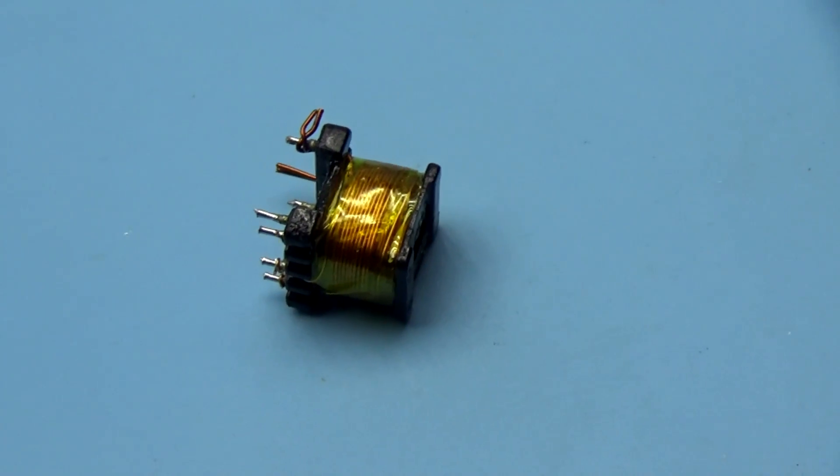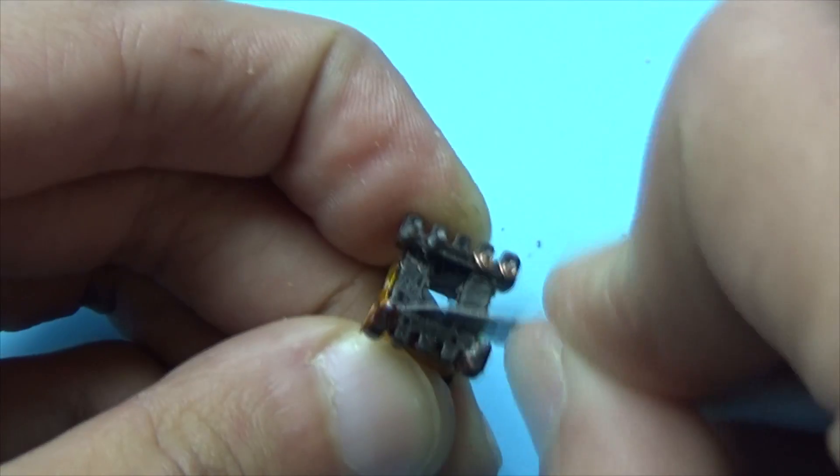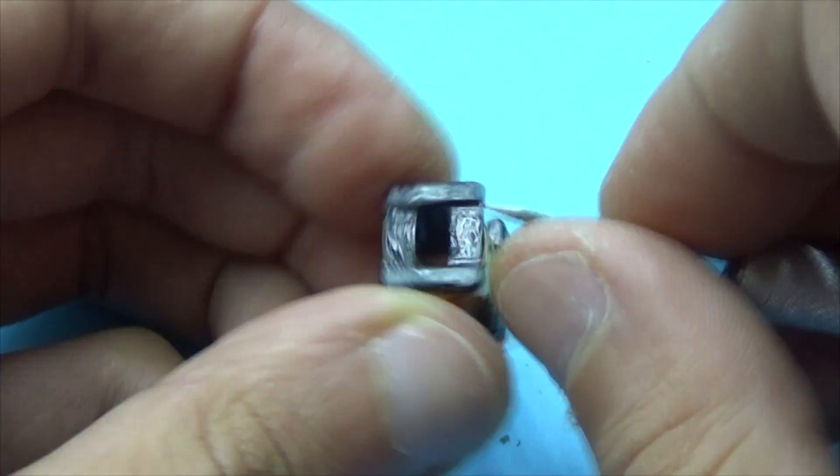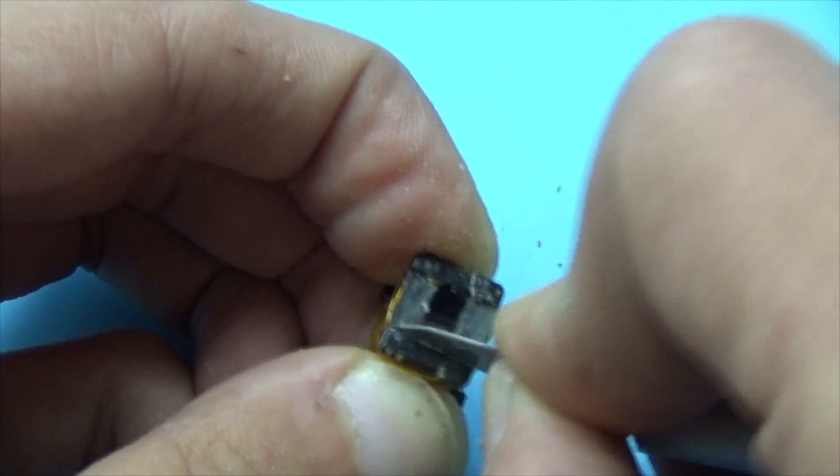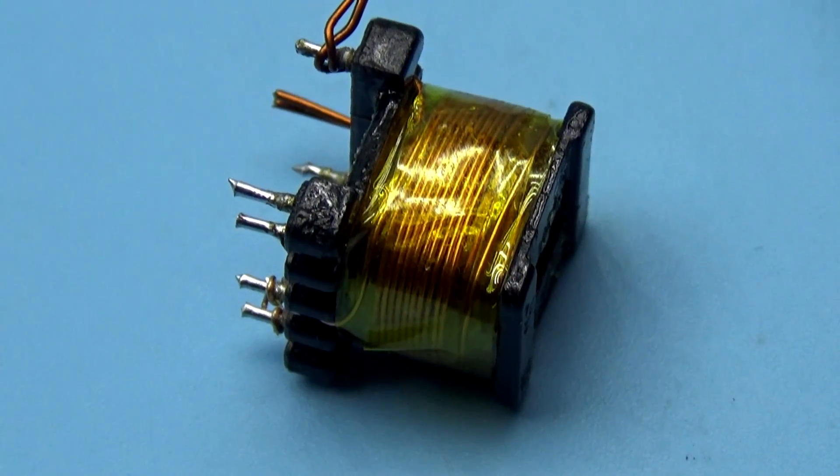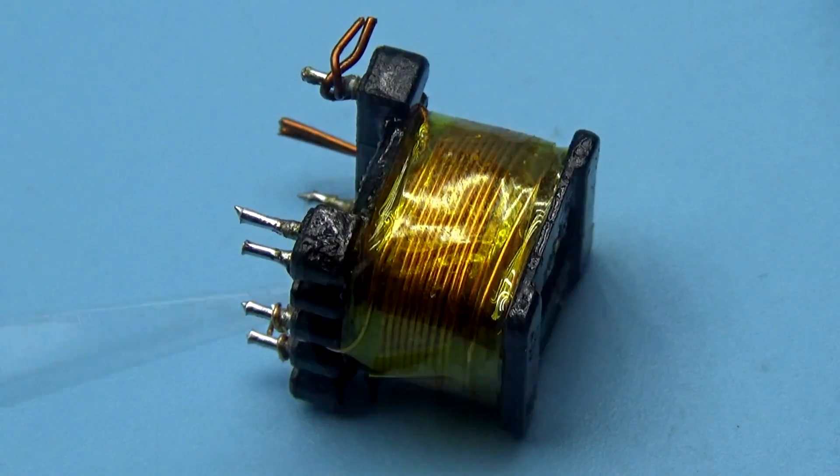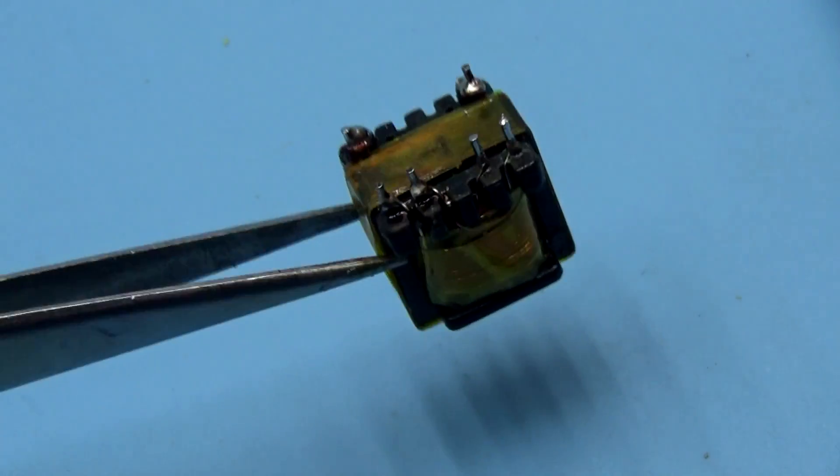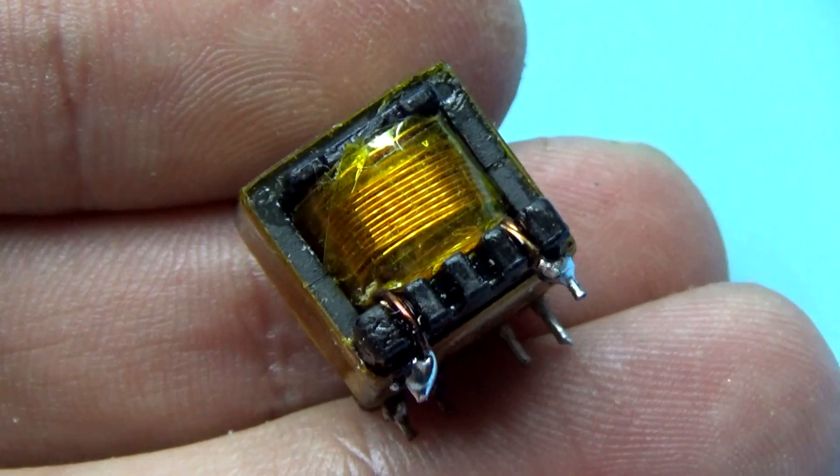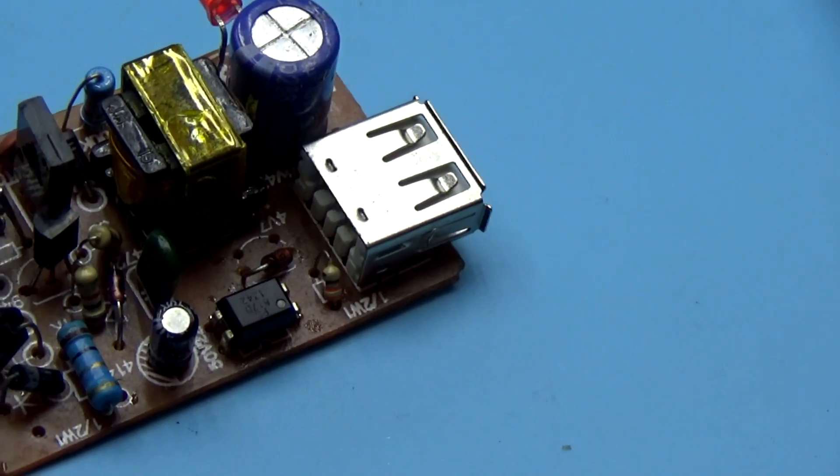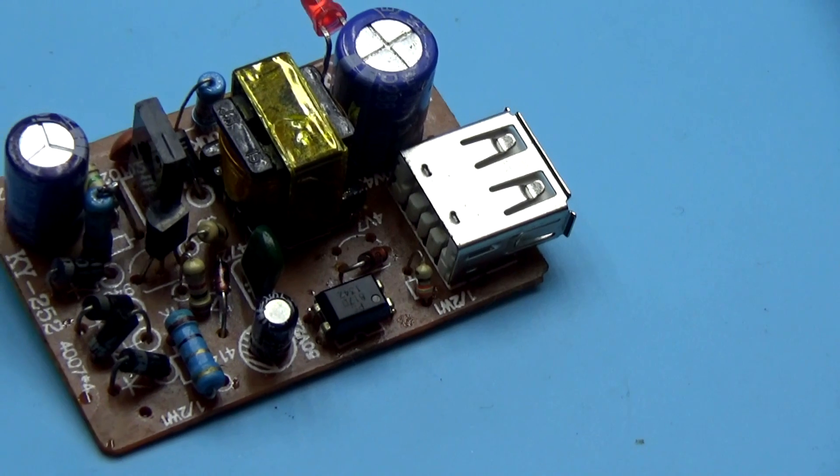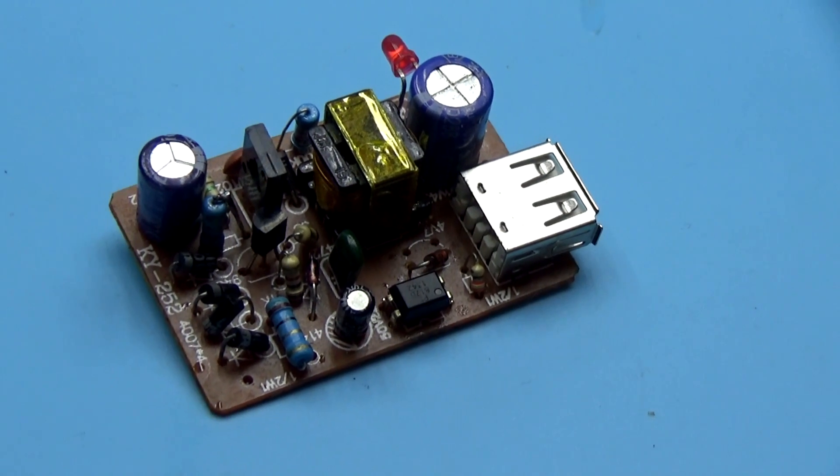It remains to assemble the transformer. Before assembly, you need to carefully clean the frame and halves of the core from the old glue. We are assembling the transformer. The halves can be tied down with scotch tape or a drop of super glue, but this should be done only after we make sure that everything is working properly. We put the transformer in place and probably you thought that was all, but no.